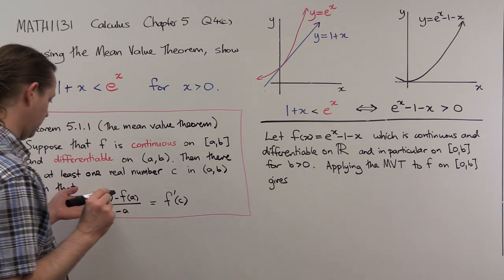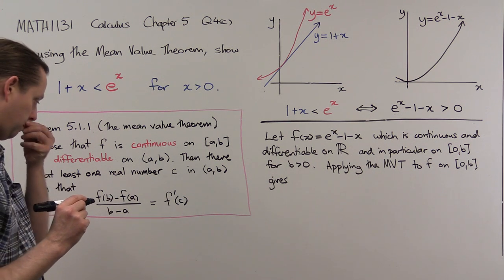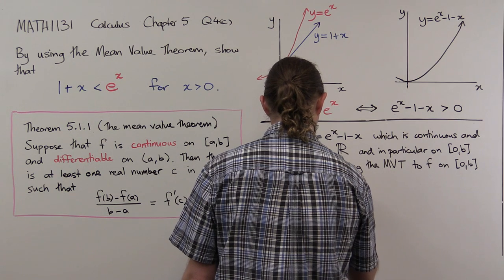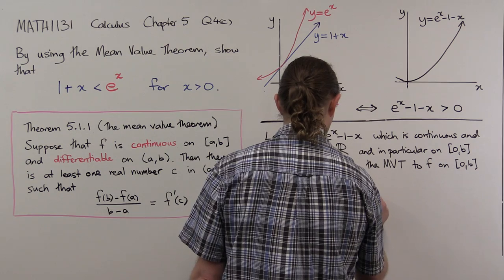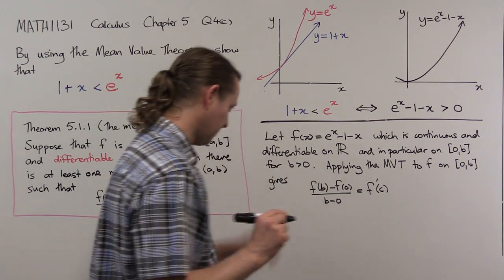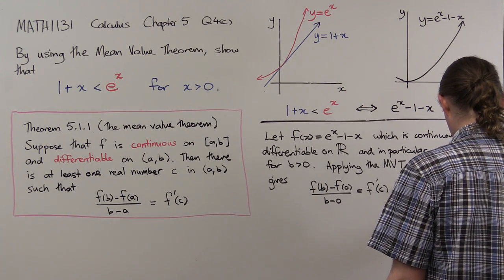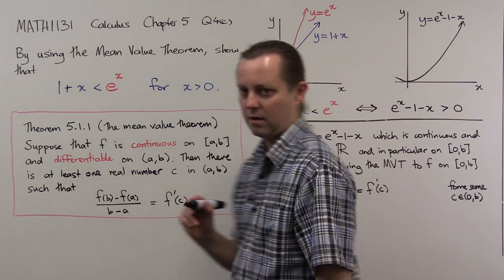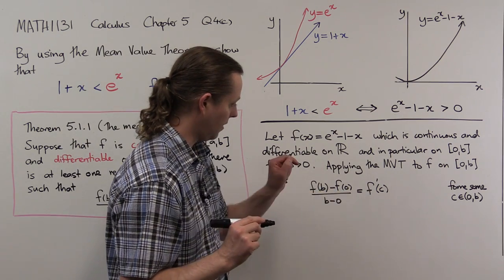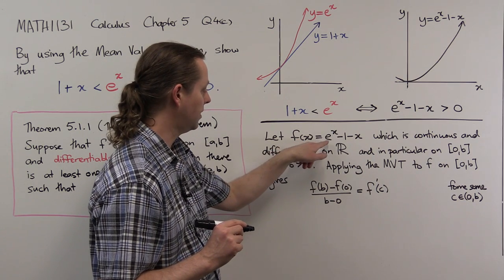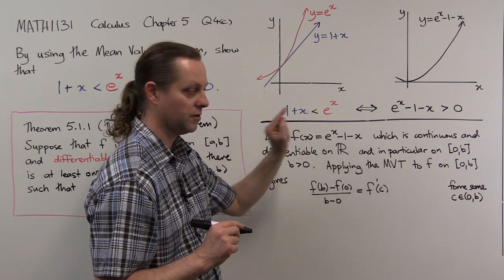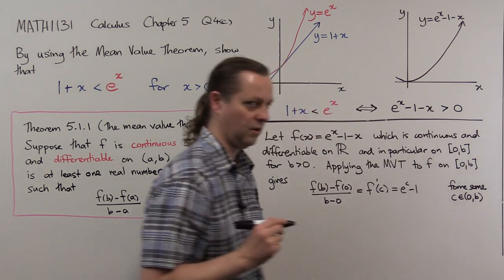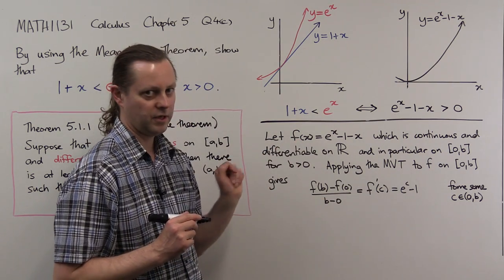The mean value theorem tells us that f of b minus f of 0 over b minus 0 equals f prime of c, for some c in the open interval (0, b). I can calculate this derivative easily: f prime of x equals e to the x minus 1, so f prime of c equals e to the c minus 1.